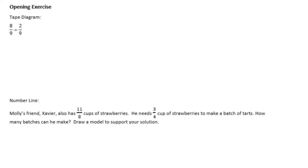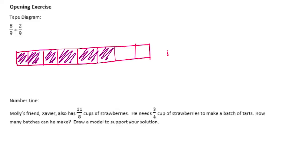8 ninths divided by 2 ninths. So it wants us to draw a tape diagram representing this problem. So I'm going to show 8 ninths, make it look a little more even. I'll shade in 8 of them. So there's 8 ninths and I'm going to split it into groups of 2 ninths. So there's 1 group of 2 ninths, 2 groups of 2 ninths, 3 groups, and 4 groups of 2 ninths. So this would be equal to 4.